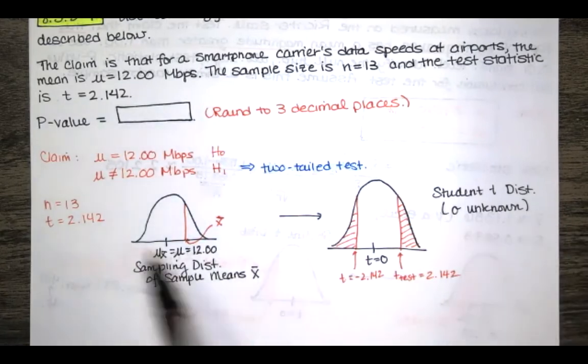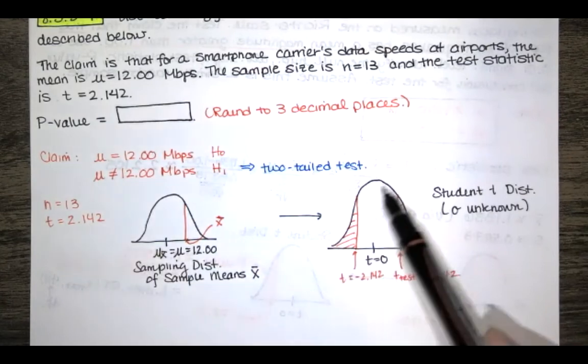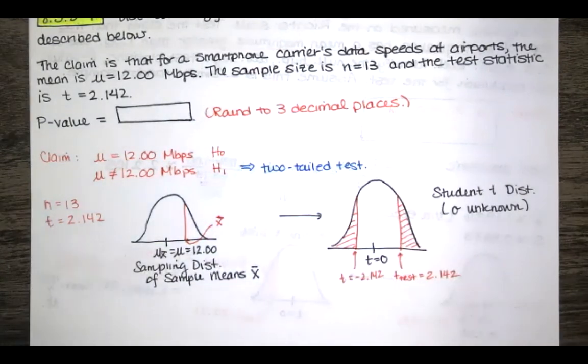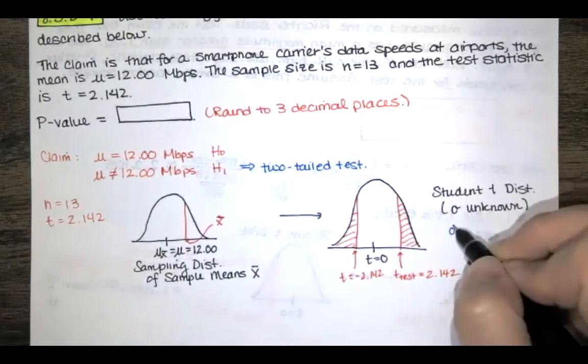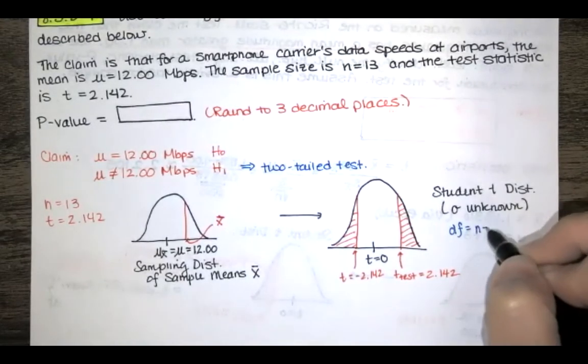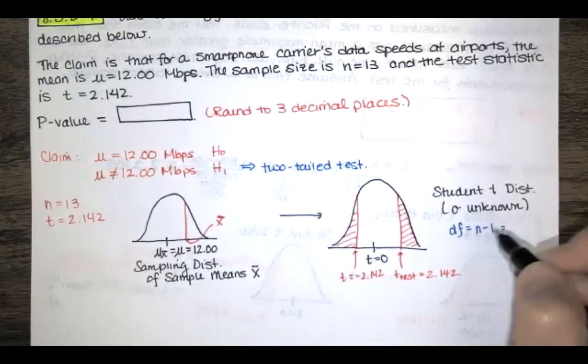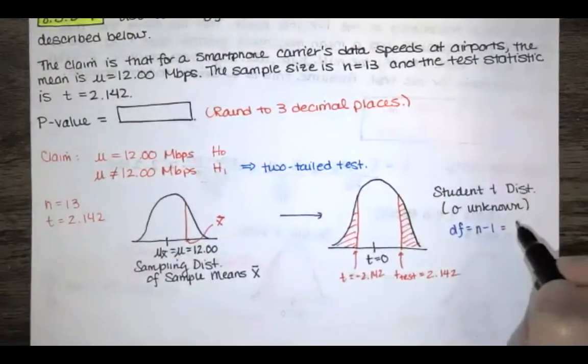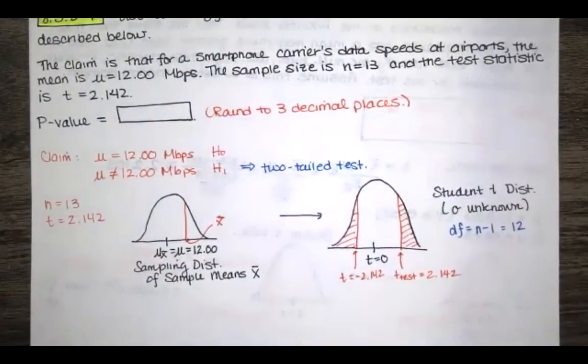Actually now I'm seeing where I need that sample size. When we're talking about a student t distribution this shape depends on the sample size which and we typically think of it as depending on what's called the degrees of freedom of our data set. So the degrees of freedom in this context are just given by the sample size minus one. So our sample size is 13 so the sample size minus one is just 12.